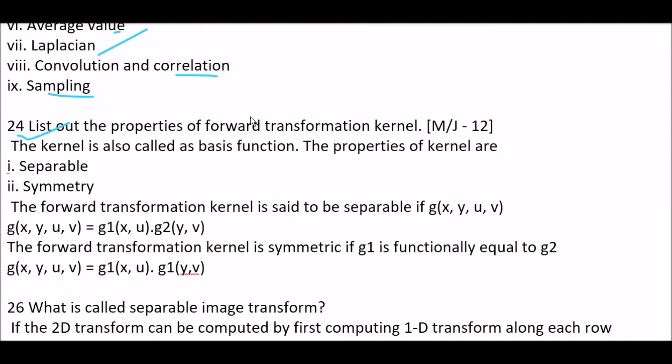Next question. List out the properties of forward transformation kernel. Answer is, the kernel is also called basis function. The properties of kernels are, first one, separable, and second one is symmetry. Separable and symmetry are the properties of transformation kernel. The forward transformation kernel is said to be separable if G(X, U) and G(Y, V) can be separated. And the forward transformation kernel is symmetric if G(X, U) equals G(U, X).